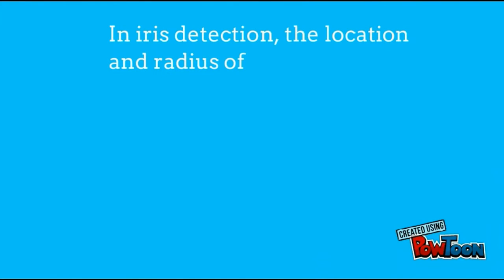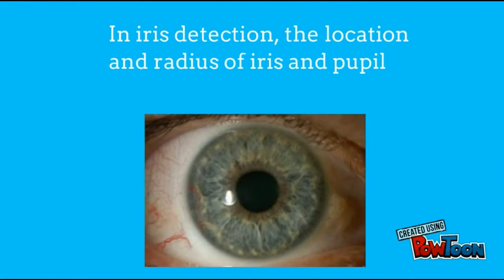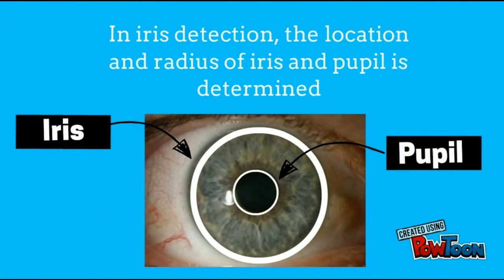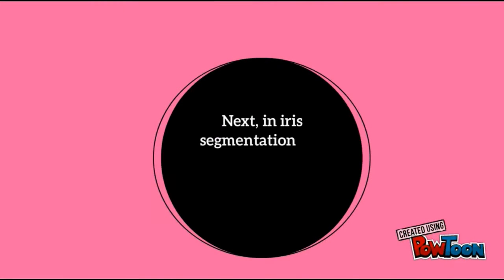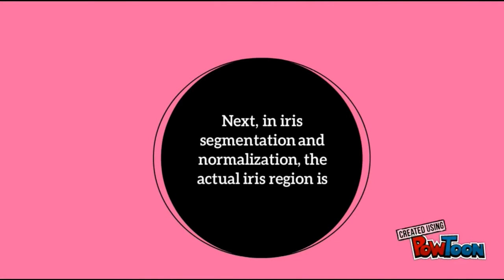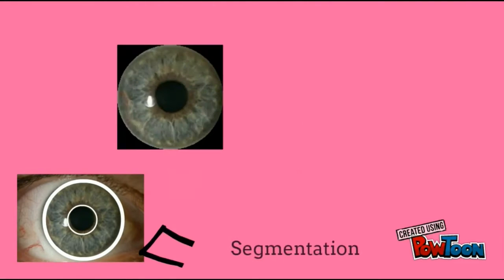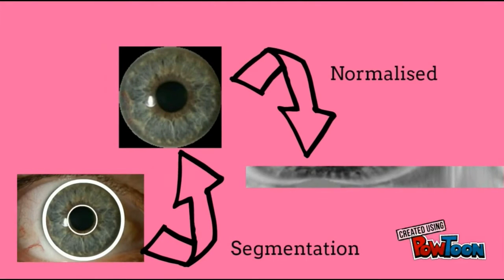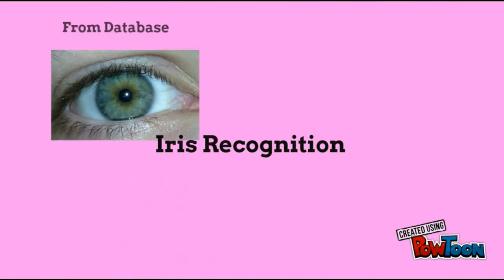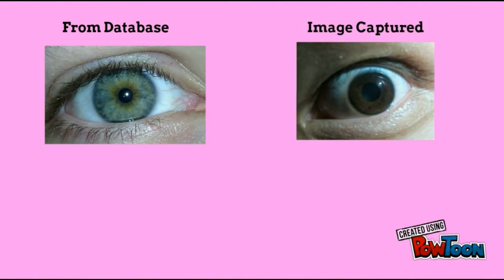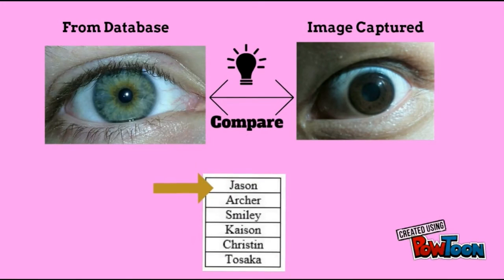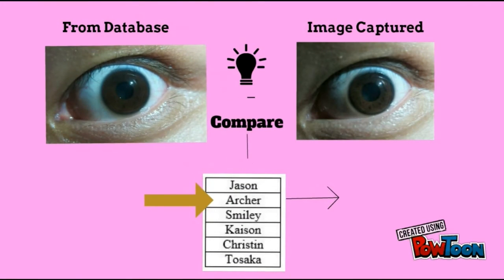In iris detection, the location and radius of the iris and pupil are determined. Next, in iris segmentation and normalization, the actual iris region is extracted. In the iris recognition process, the identity of the individual is determined within a database by comparing the iris images.